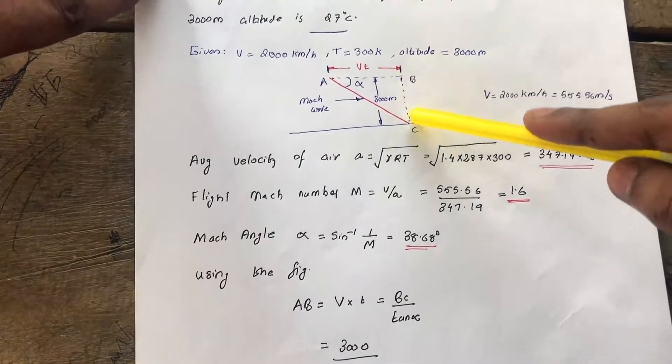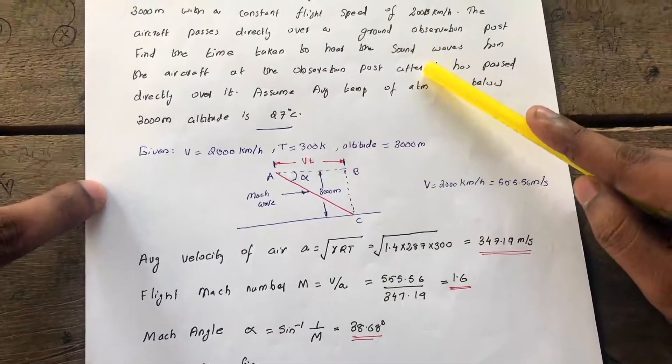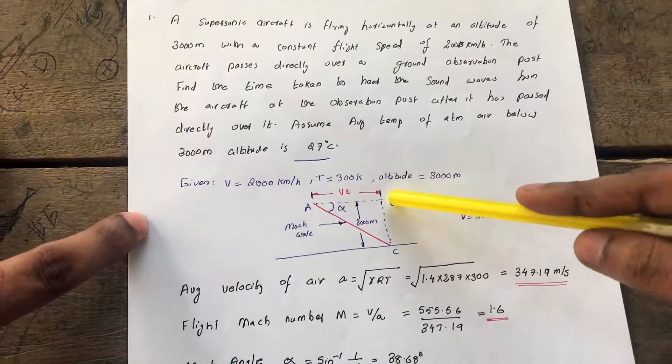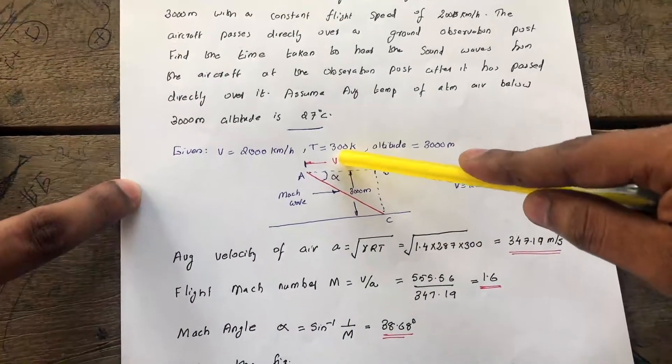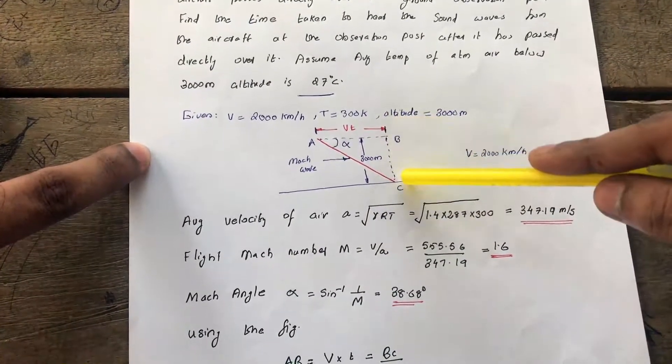Our question is to find the time taken to hear the sound wave from the aircraft at the observation post after it has passed. So time t is the question. We know the velocity, we know this distance also.